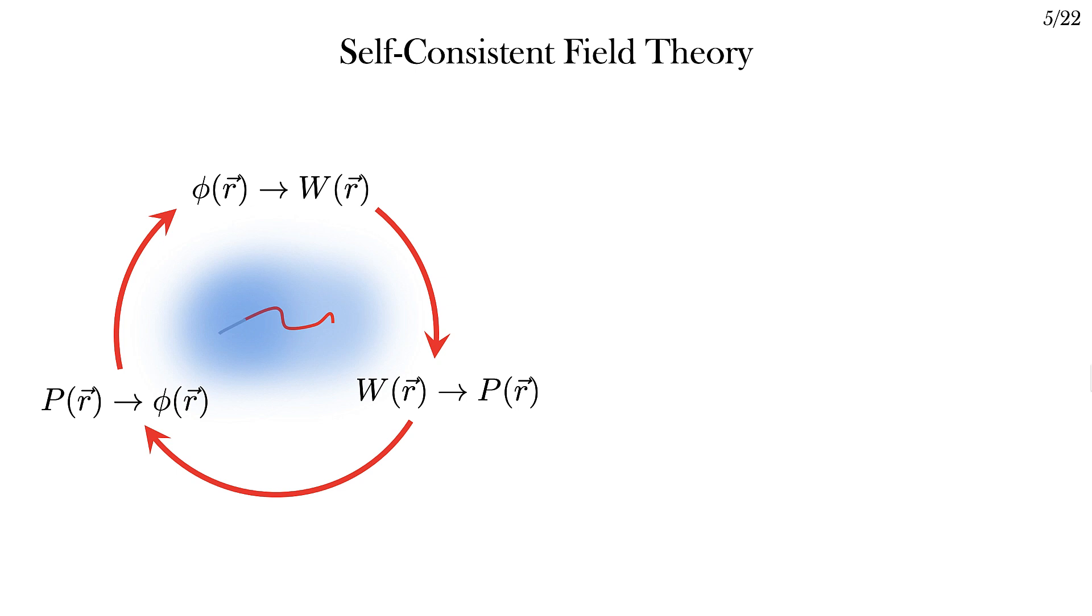So starting from some configuration, I can calculate the configuration that the system wants to be in. If these are the same, the system's happy and is in a stable or metastable configuration. Otherwise, the difference gives me local exchange chemical potentials that drive the evolution of the system.